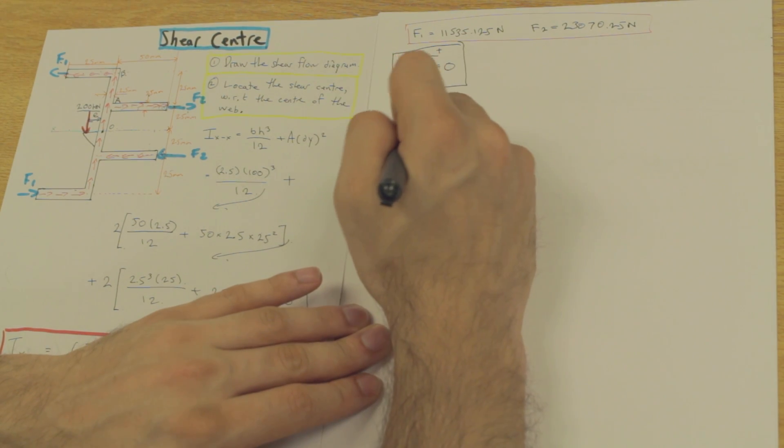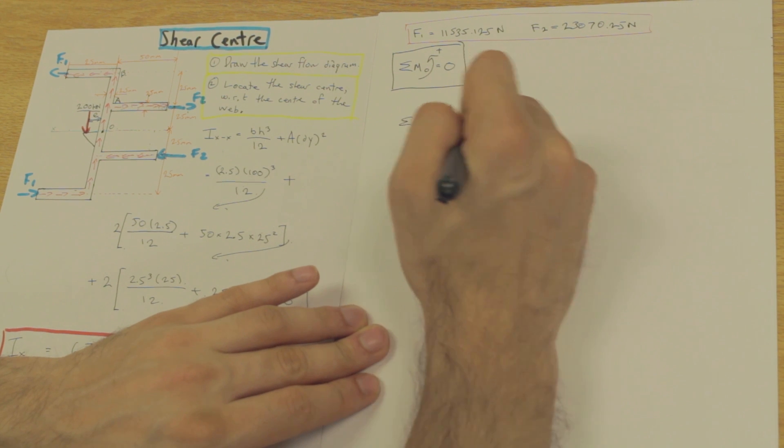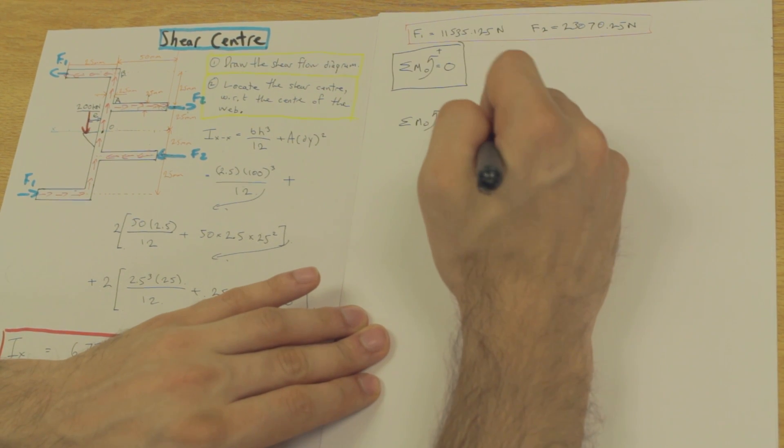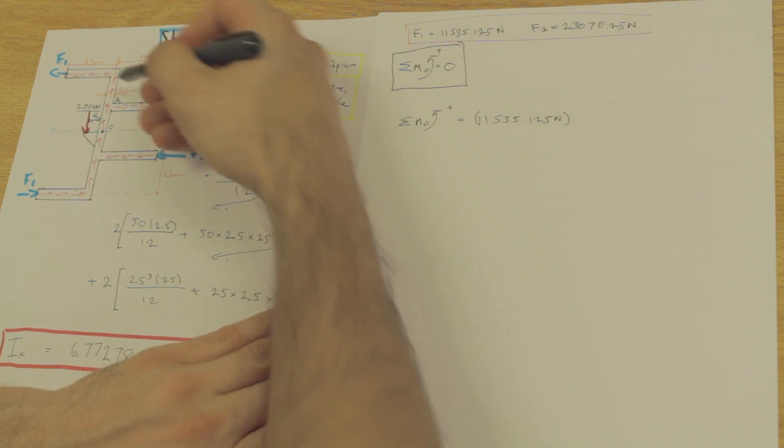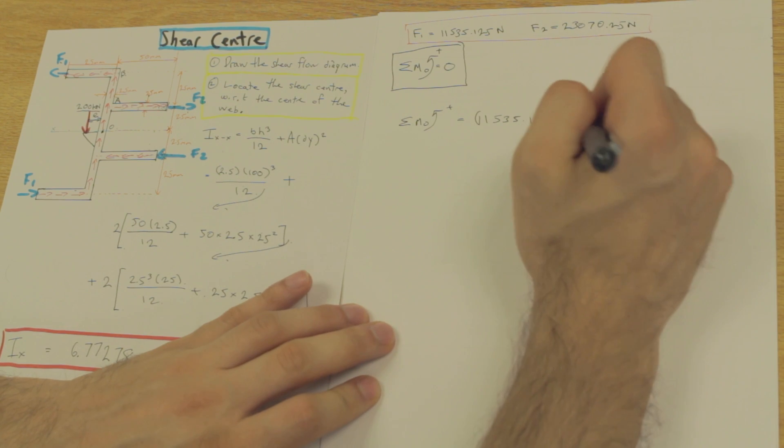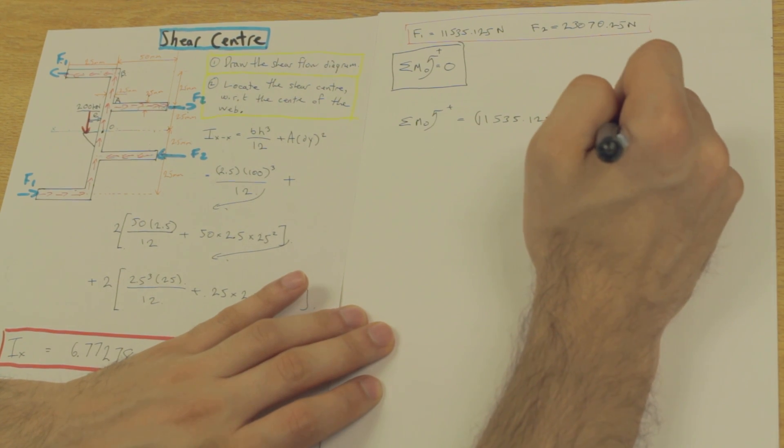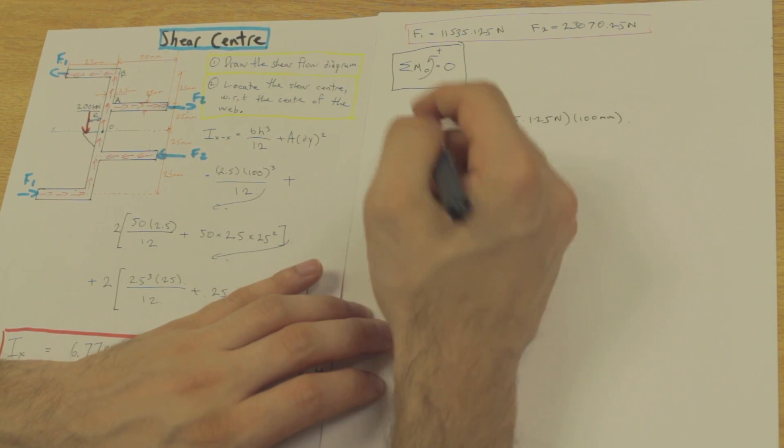So let's say that the summation of the moment around zero, and let's write this out now. We have 11,535.125 Newtons, and we're going to multiply that by the distance between the F1s, which is going to be 100 millimeters.